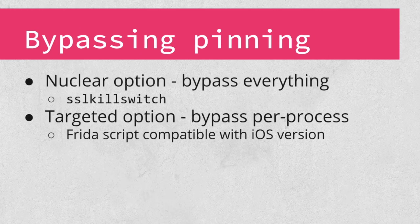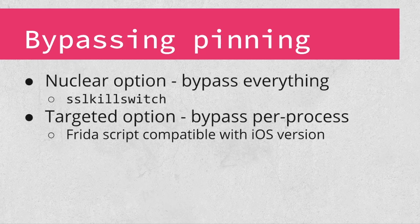There are two schools of thought on bypassing pinning. One is to install a broad bypass that affects the device as a whole. The SSL kill switch package for jailbroken devices is a popular option for bypassing pinning in this manner. The advantage is that you don't have to think about it — you install it and turn it on and you're done. The disadvantage is that you might bypass protections for traffic unnecessarily, and depending on your use of the device, you may compromise your own security. My own preference is a more targeted option that bypasses pinning on a per-process basis. One way to do this is by using a Frida script that targets the correct version of iOS. Frida enables us to inject JavaScript into the application at runtime to manipulate it. We can use it on a jailbroken device, but if we have an unencrypted copy of the application, we can also use it on a jailed device as well.